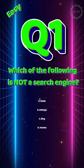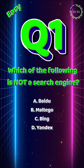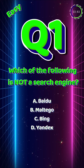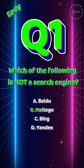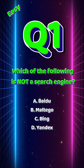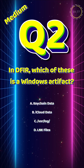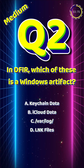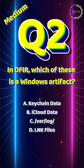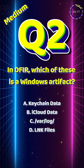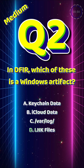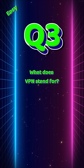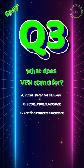Which of the following is not a search engine? In DFIR, which of these is a Windows artifact? What does VPN stand for?